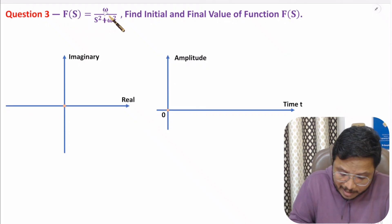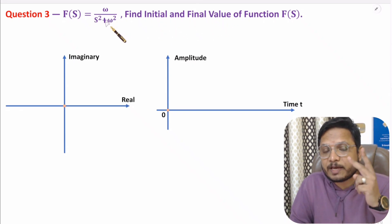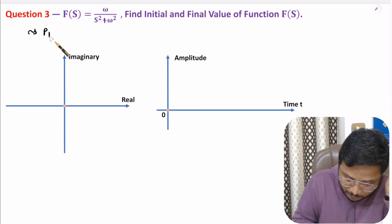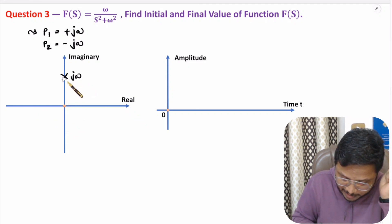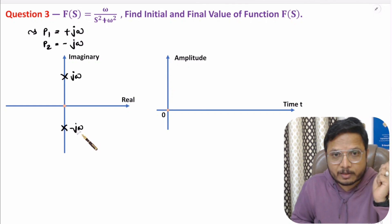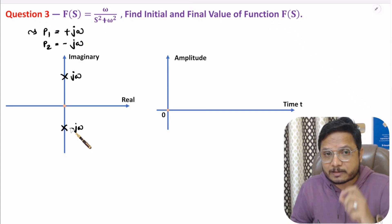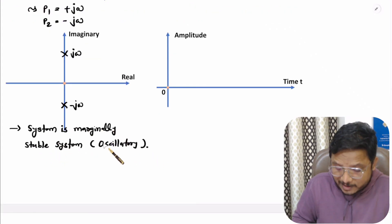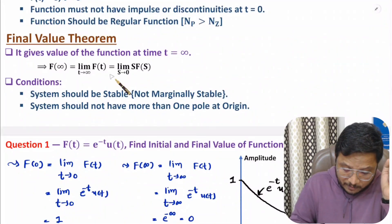For the third example, we have F(s) = ω/(s² + ω²). We need to identify the initial and final value. Observing this function, there are two poles: P1 at +jω and P2 at −jω. In the s-plane, one pole is at +jω and the other at −jω — both on the imaginary axis. When poles are on the imaginary axis, the system is an oscillatory, marginally stable system. For a marginally stable or oscillatory system, the final value is not possible.